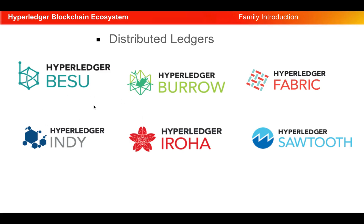Inside distributed ledgers, we have several frameworks. The first one is Hyperledger Besu, which is a distributed ledger software and an Ethereum client designed to be enterprise-friendly for both public and private permissioned network use cases. Next is Hyperledger Burrow, which is a complete single-binary blockchain distribution focused on simplicity, speed, and developer ergonomics.